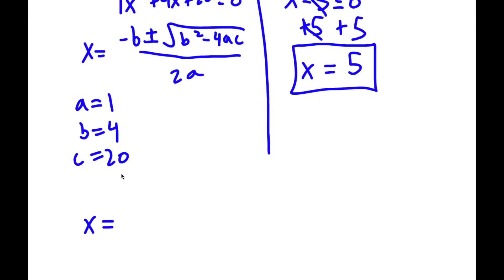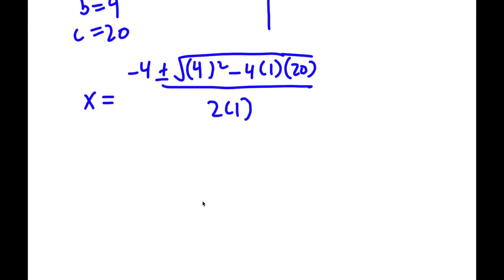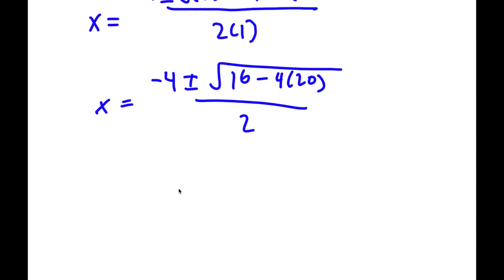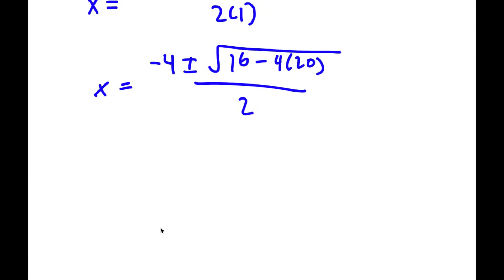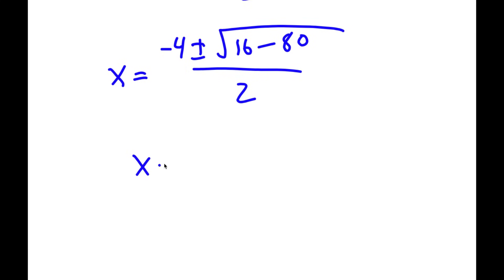I have x is equal to negative b, so negative 4, plus or minus the square root of b squared — so 4 squared — minus 4 times a, which is 1, times c, which is 20, all over 2a, so 2 times 1. That gives x equals negative 4 plus or minus the square root of 16 minus 4 times 20, which is 80, all over 2. So I have negative 4 plus or minus the square root of 16 minus 80, and 16 minus 80 is negative 64, over 2.